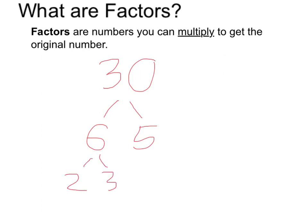6 itself can be factored as 2 times 3, but none of these numbers can be factored anymore. So 2, 3, and 5 are what we call prime factors.